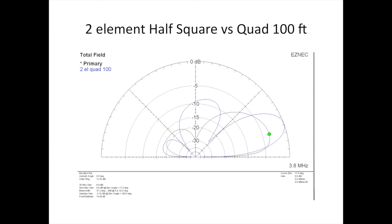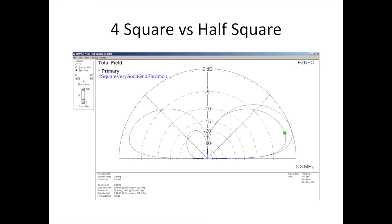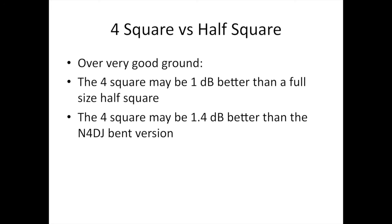Let's touch a minute on a four square array. Modeling of a four square array on 40 meters indicates the gain at 15 degrees is probably 7.2 dBi over very good ground. 4.5 over average ground. And I wouldn't think the gain would be much different on 80 meters. The predictions are the full size four square is better than the half square, but not by very much. Over very good ground, the four square may be 1 dB better than a full size half square. And the four square may be 1.4 dB better than the N4DJ bent half square.